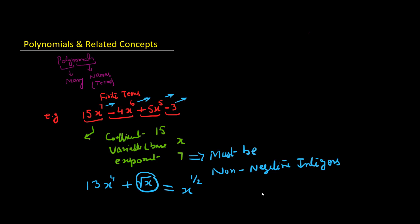What about this minus 3 — is it an algebraic term, and where is the base? If you recall from the exponent lecture, any number raised to the power 0 is 1, so x raised to the power 0 is 1. That means I can write minus 3 as minus 3 times x raised to the power 0. Now it has a base and an exponent, so this is also a valid polynomial term.